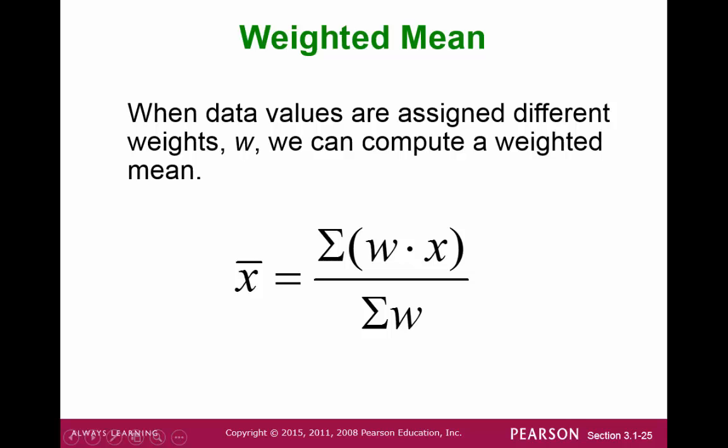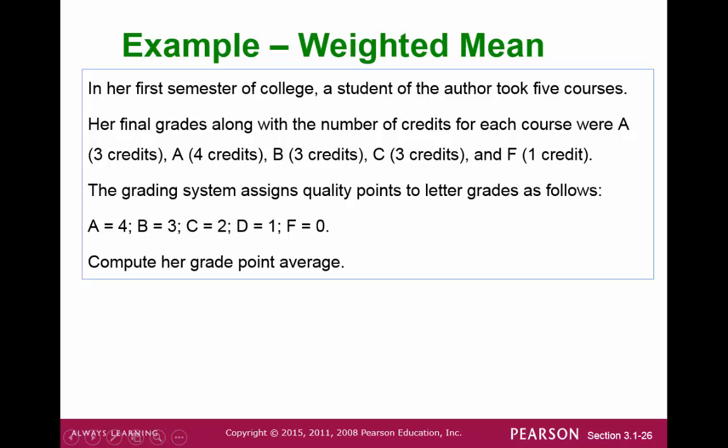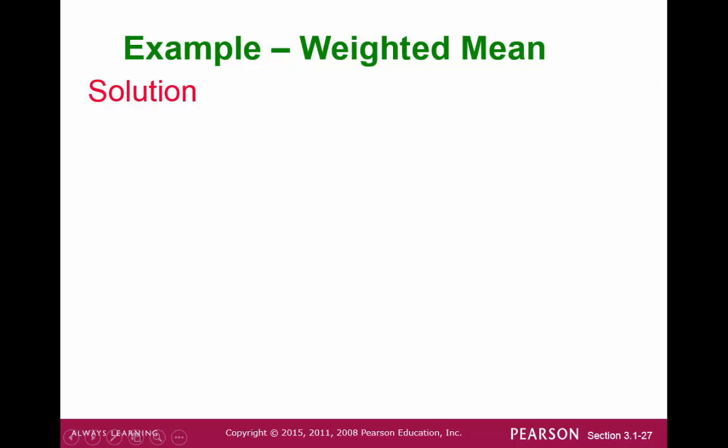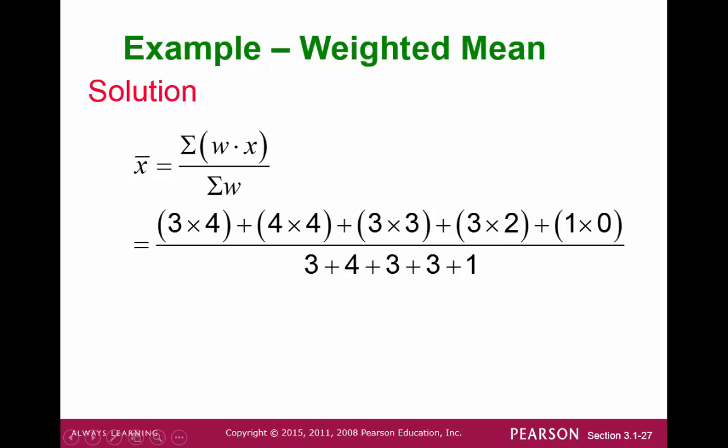One more way to find a center is with the weighted mean. This is the way to compute your GPA, your grade point average. For each class you complete, the w would refer to the number of units, and the x would be your grade. 4.0 for an A, 3.0 for a B, etc. Here's an example. For the five courses, she got an A in a three unit class, an A in a four unit class, a B in a three unit class, etc. So the weights are given here, and the x's are given according to the grades. And so we put these values into the formula, and we get the mean, which is her GPA, and her GPA is 3.07.